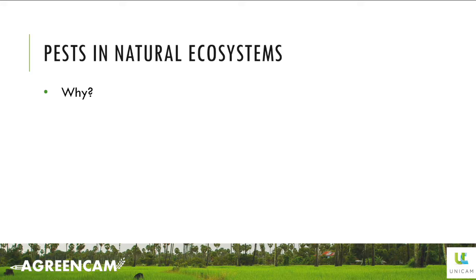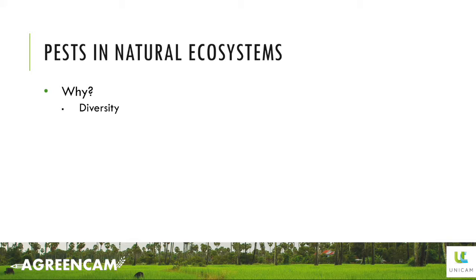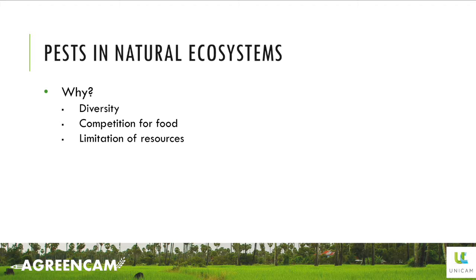We may ask ourselves: why aren't there pests in natural ecosystems? Well, this is because nature has some characteristics that agricultural fields lack. First, in nature there is a lot of diversity, which means that there are many species interacting. Second, there is competition for food because resources are limited, so a new species cannot grow as much as it wants. Finally, there are natural predators, so if a species grows a lot, it is still controlled by its predators. What we have in nature is an equilibrium.